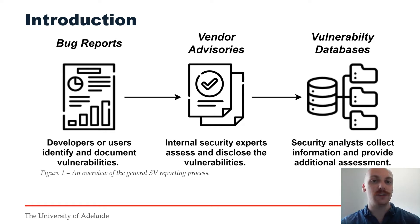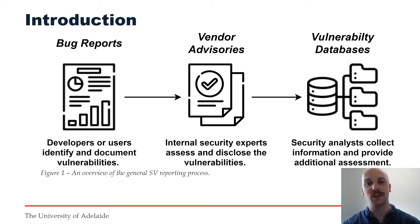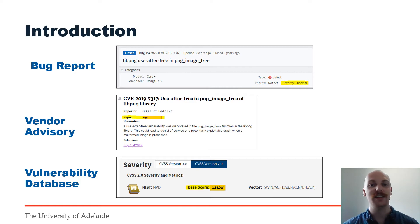Each of these data sources acts fairly independently and are maintained individually. However, due to the abundance of software vulnerabilities, just reporting them is often not enough. Hence, vulnerability reporting data sources will additionally provide assessment information required by practitioners to help prioritise vulnerabilities. Particularly, the severity of a vulnerability is often additionally recorded to help users have a straightforward way of ranking vulnerabilities.